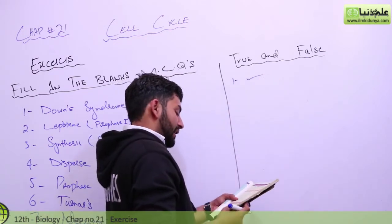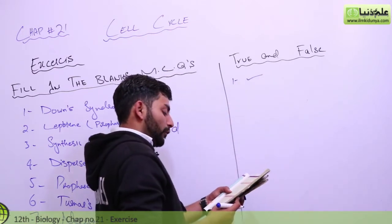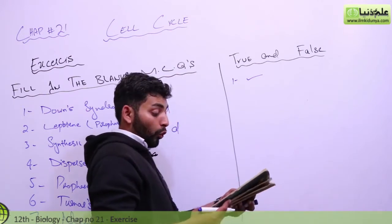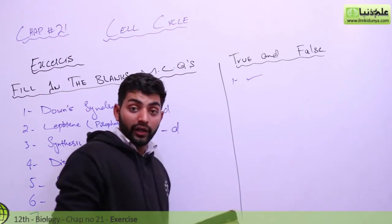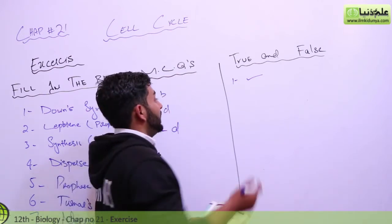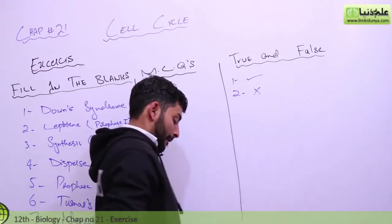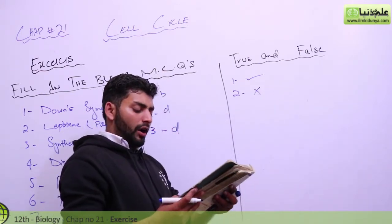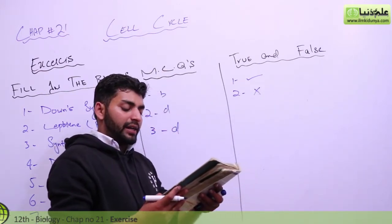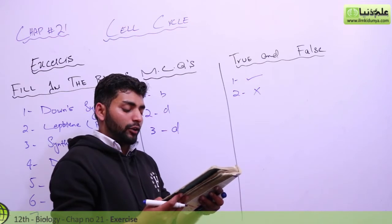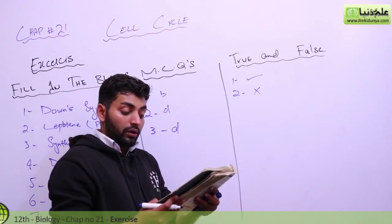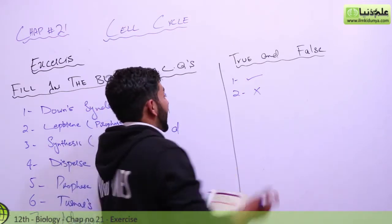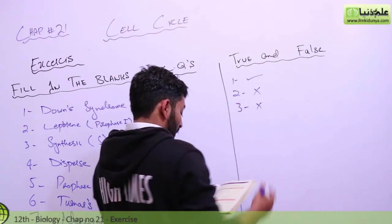Cell cycle is comprised of two phases: karyokinesis and cytokinesis. This is incorrect because the cell cycle also includes interphase. Another statement: the point where non-sister chromatids cross each other is called kinetochore. No, that would be called a chiasma — so this is also wrong.